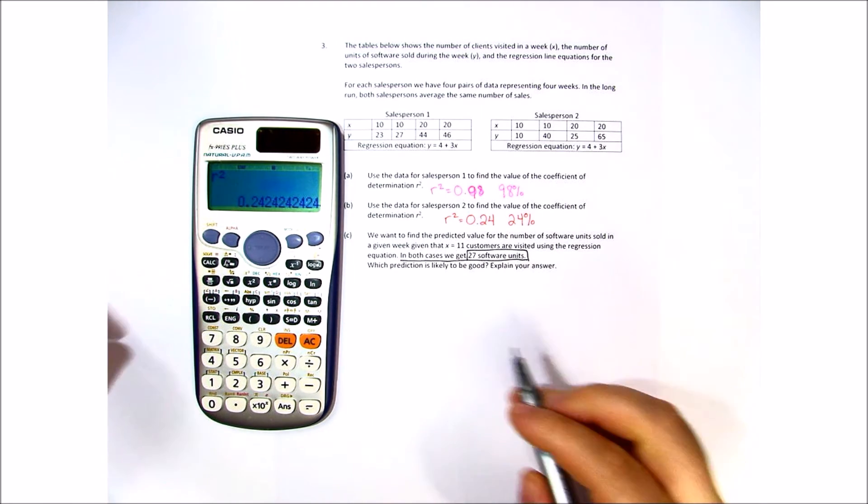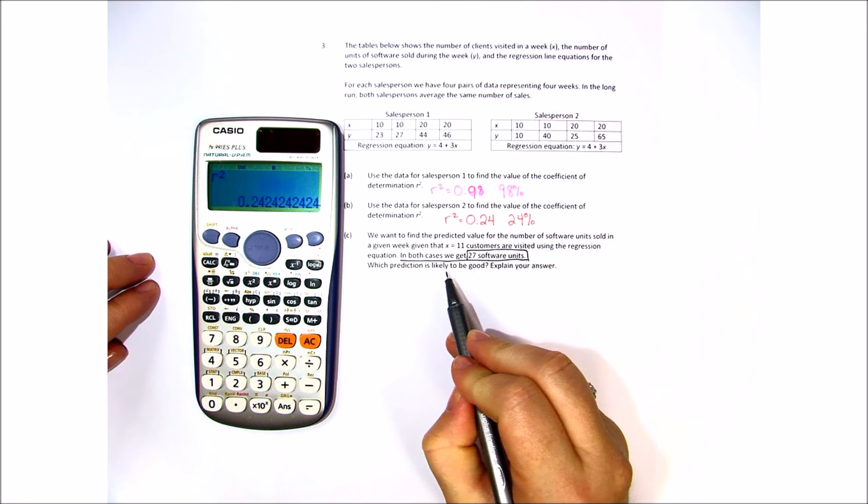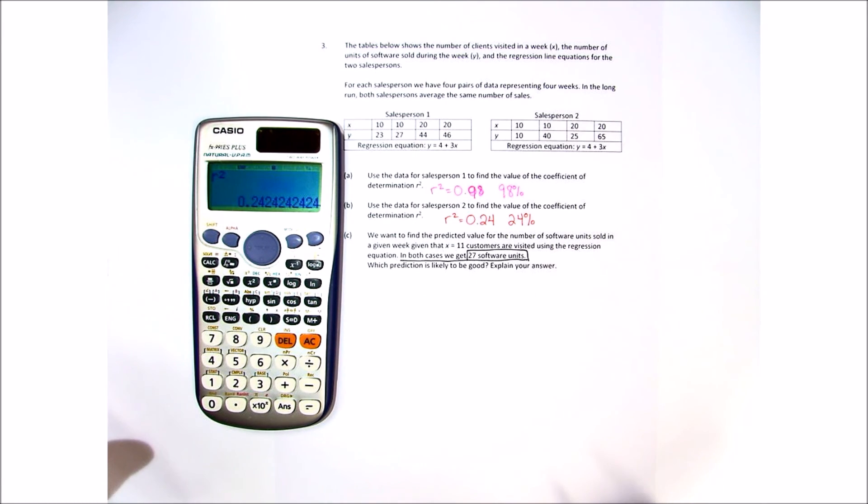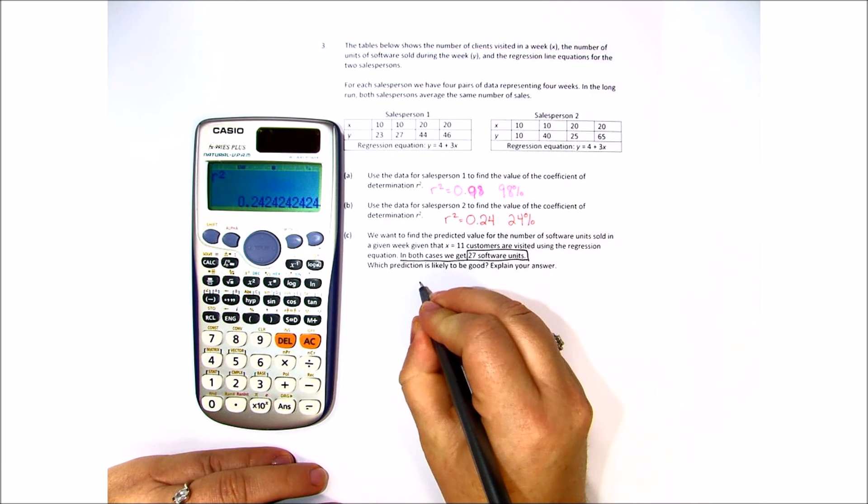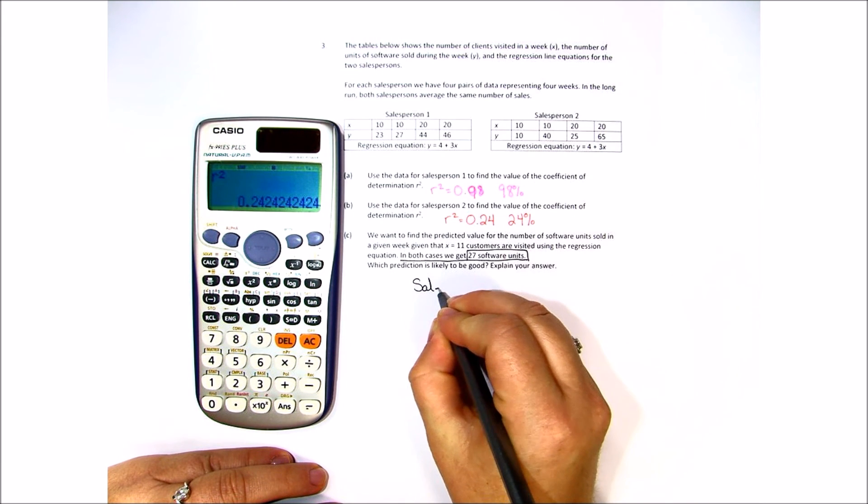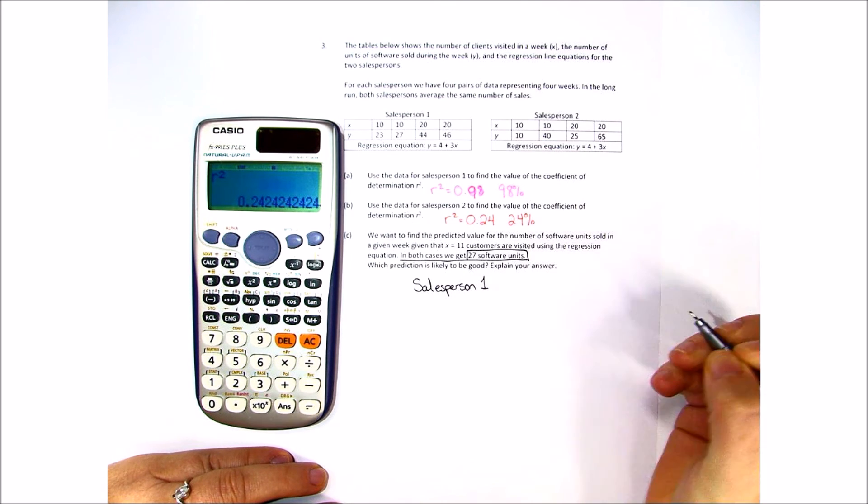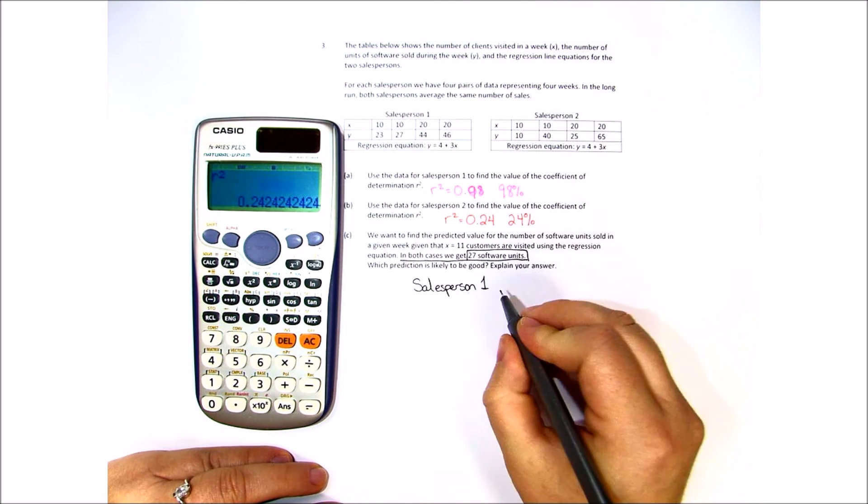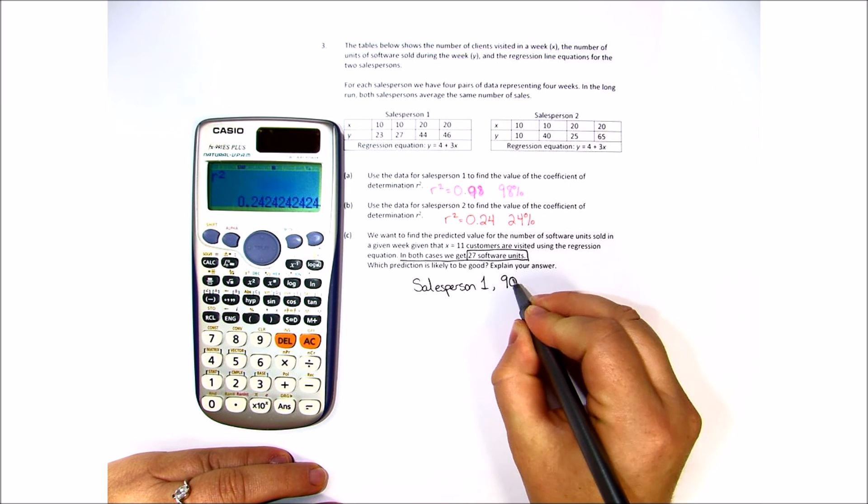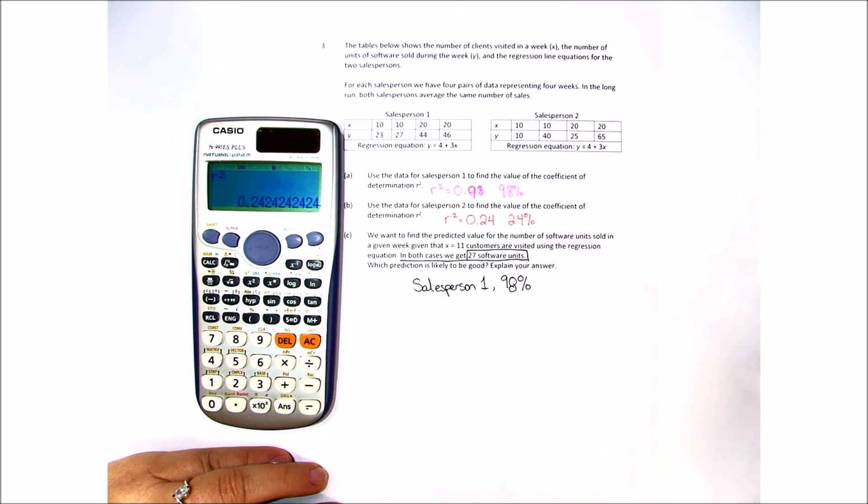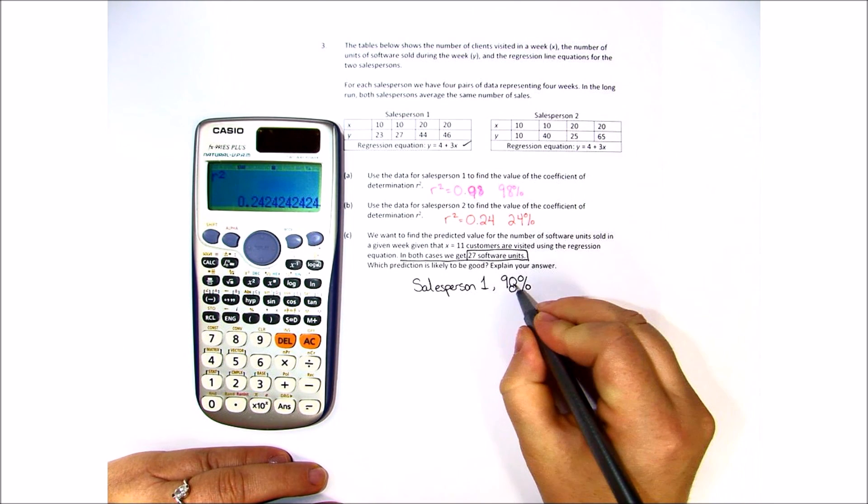What they're asking about is which prediction is likely to be good. Explain your answer. We expect sales person 1 to be the best answer because 98% of the data can be determined using the equation. So sales person 1, 98% is what we're looking at.